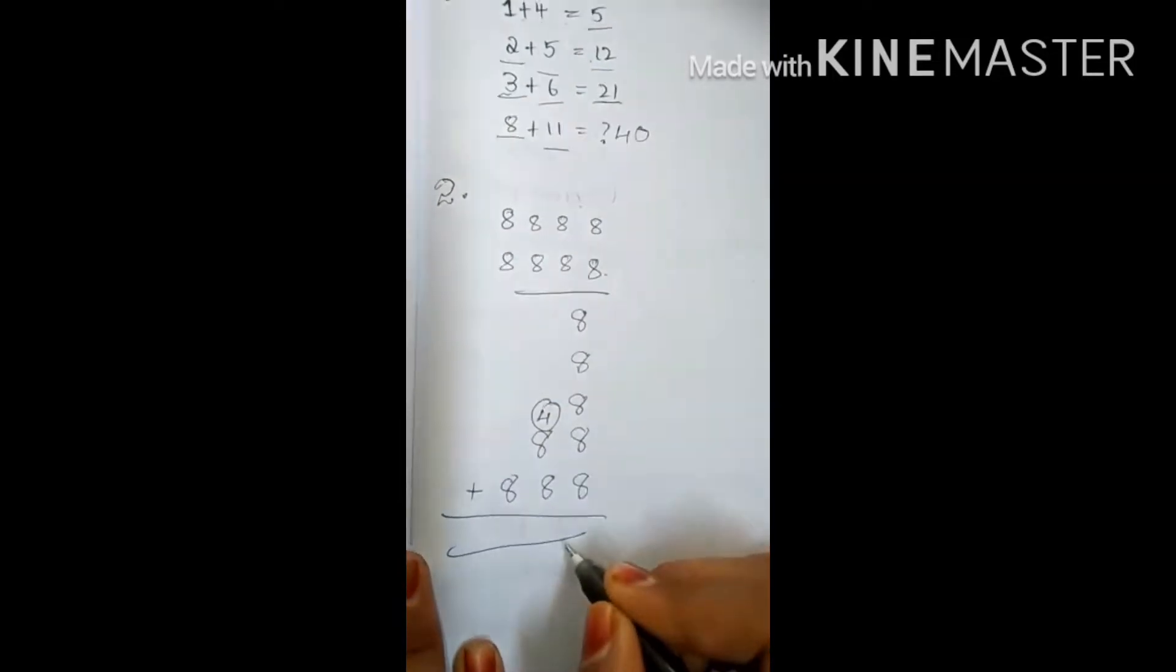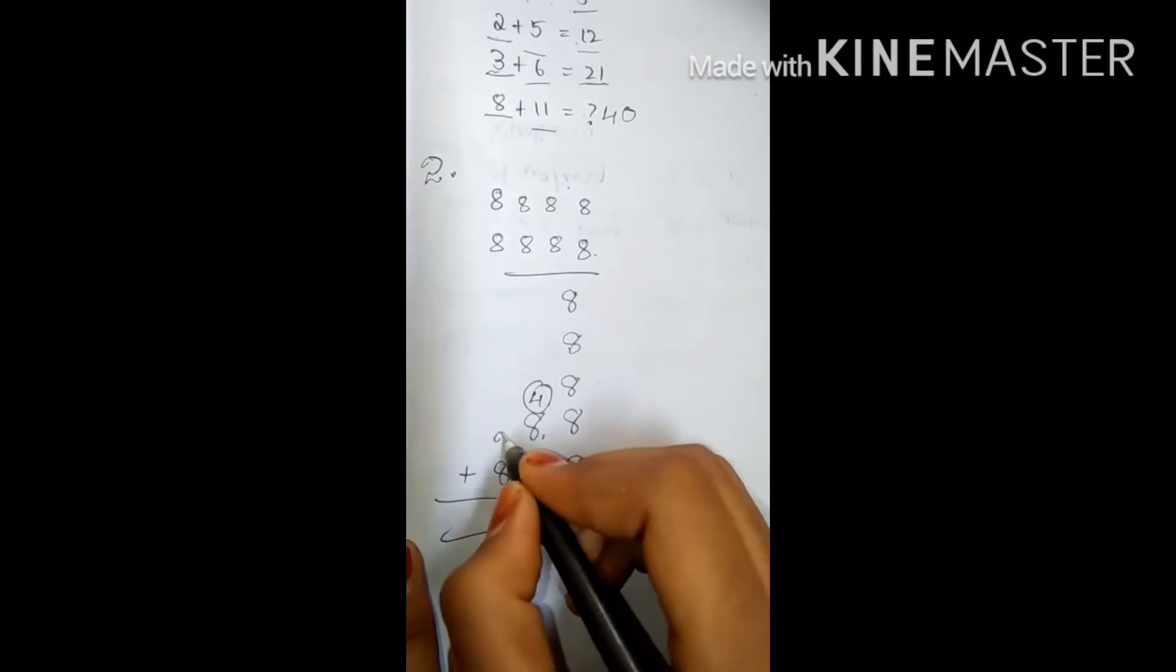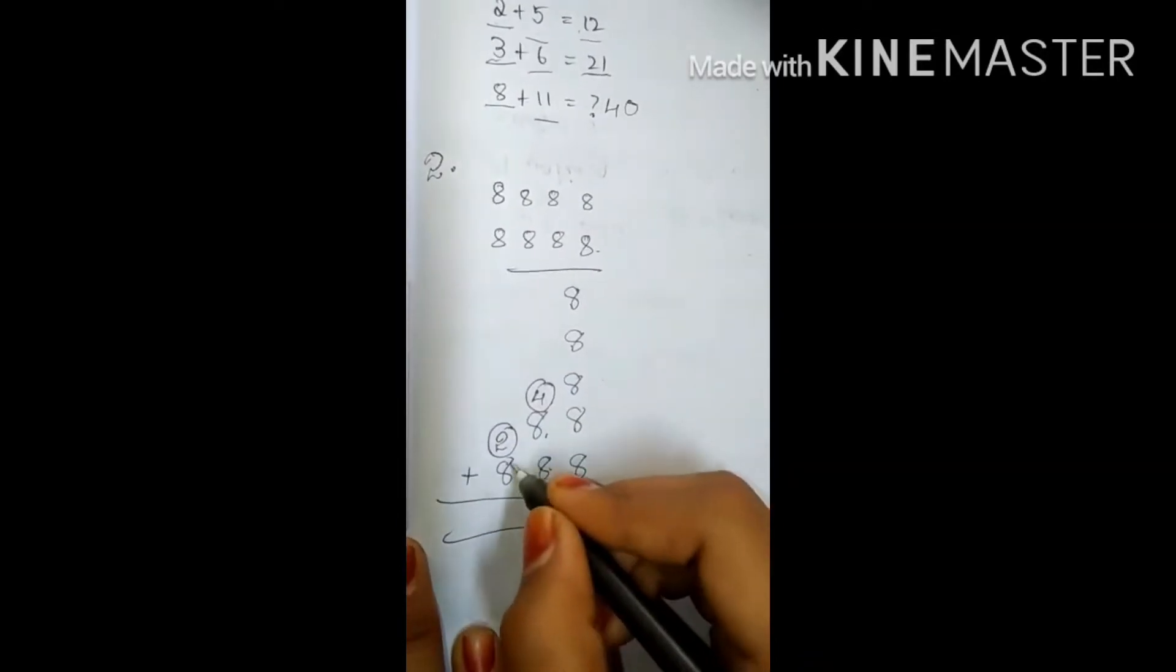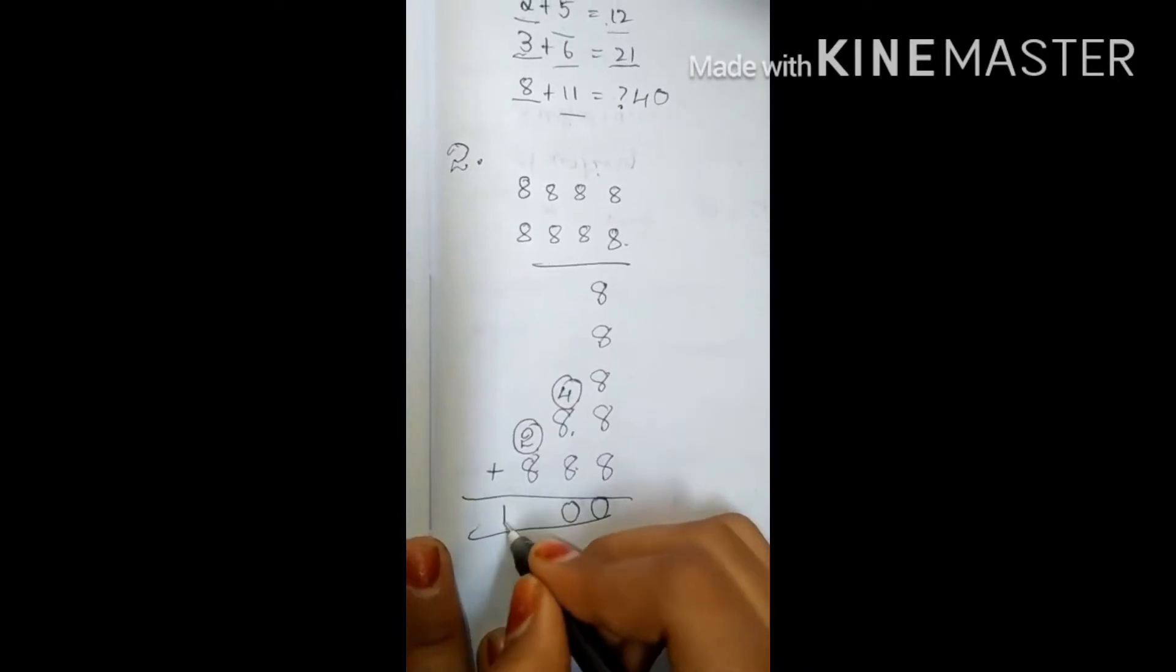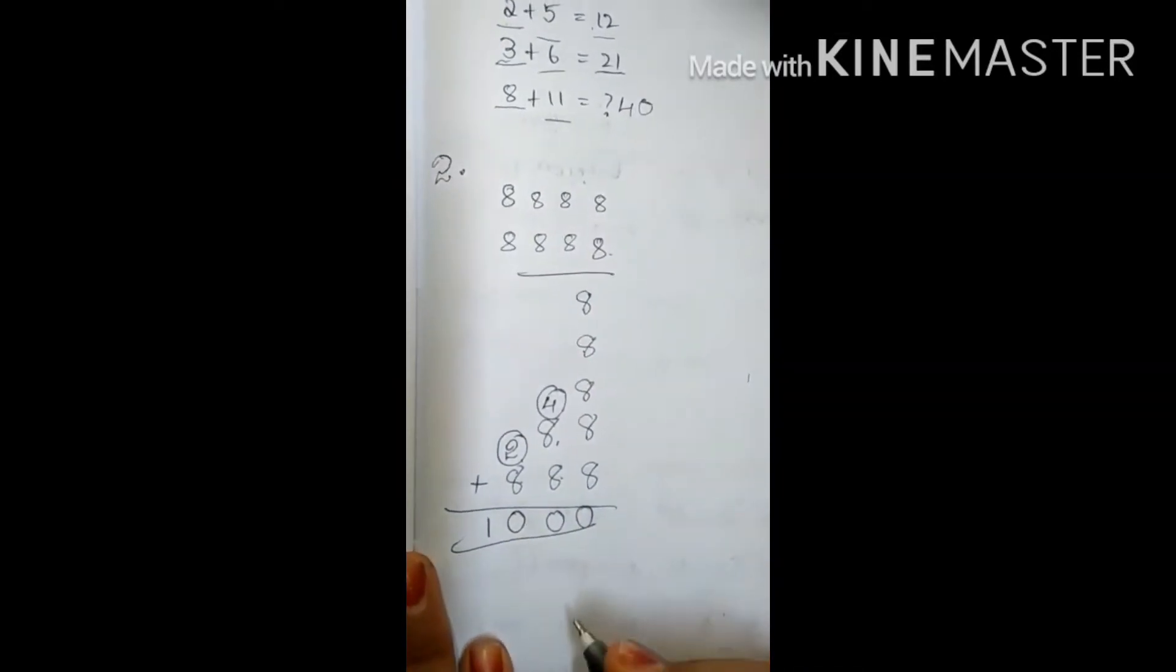Here 8 plus 8 is 16, plus 4 is 20. 88 plus 2 equals 10. So we got answer 1000. We got answer 1000.